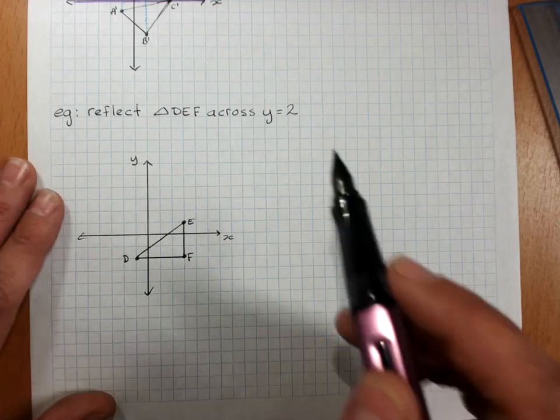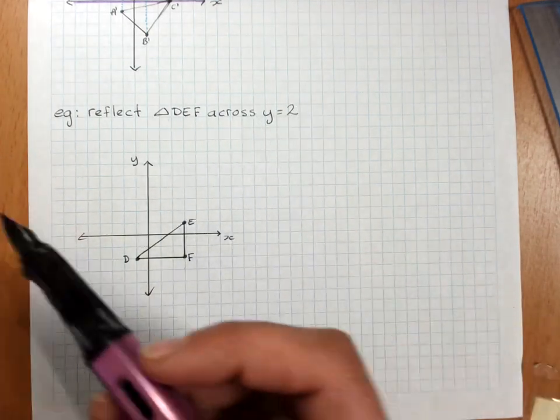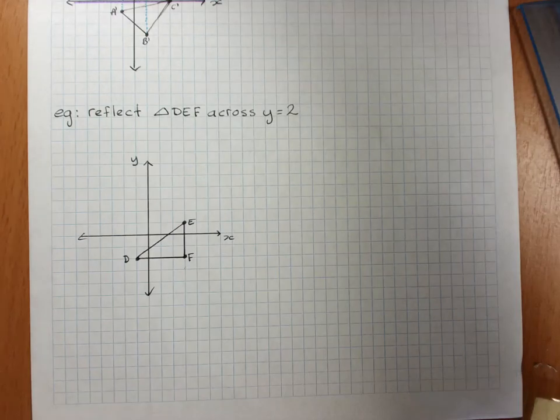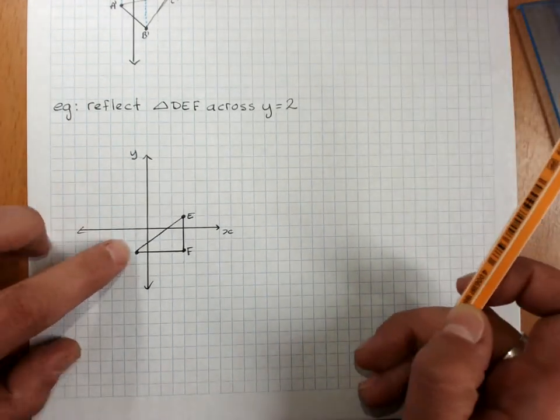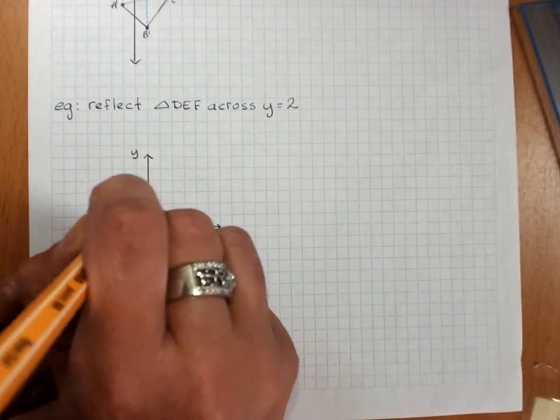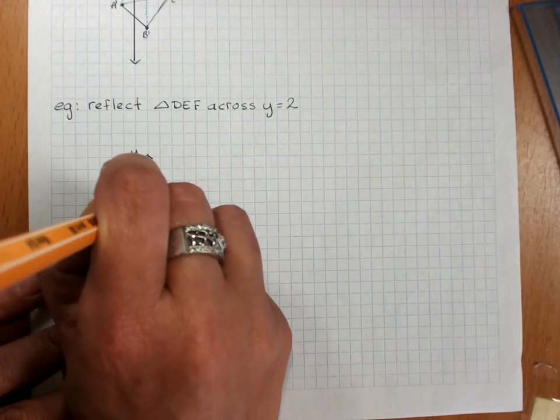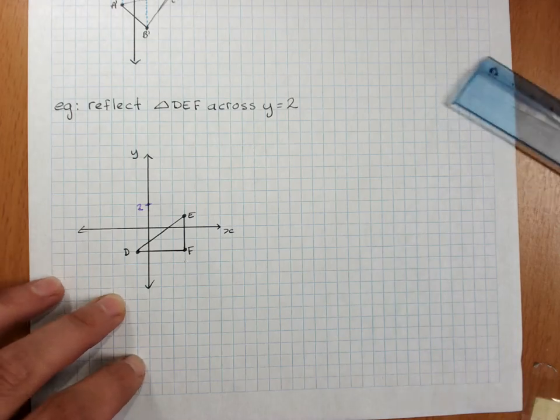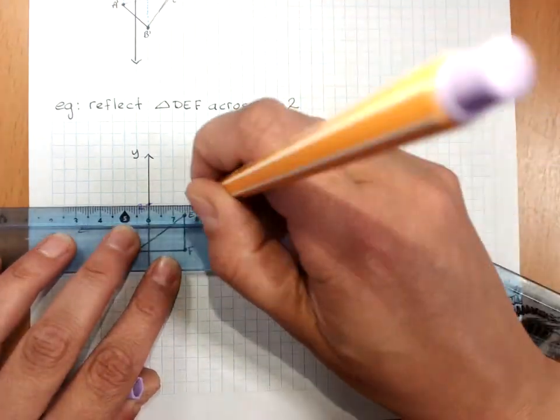Now they can also give us any other line to treat as our mirror axis. So this is saying reflect triangle DEF across y equals 2. So to do that, we'd have to remember how to graph y equals 2. Two units up on the y-axis, and a line going through that.